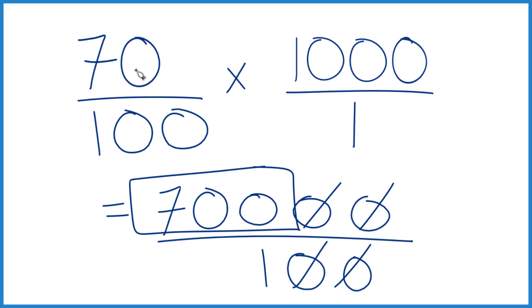You could also do it this way. You could take 70 divided by 100, get 0.7, multiply that by 1,000, and you get 700.